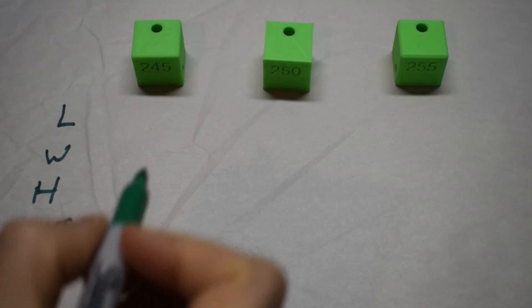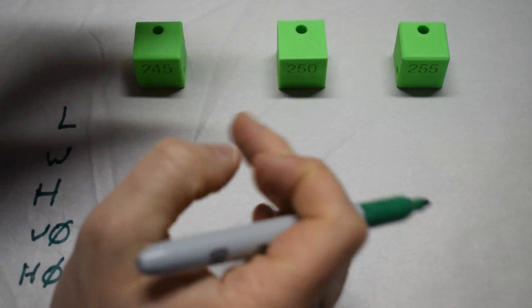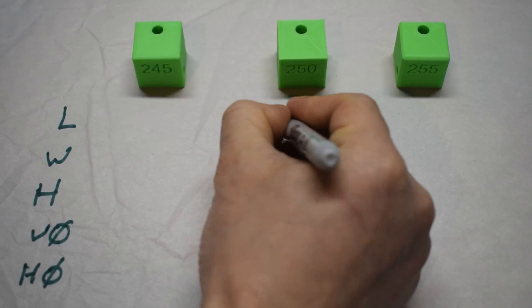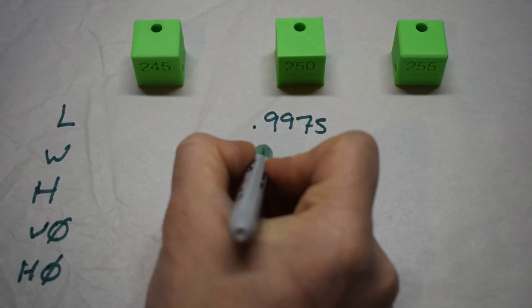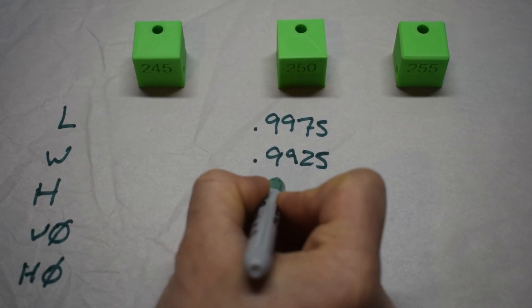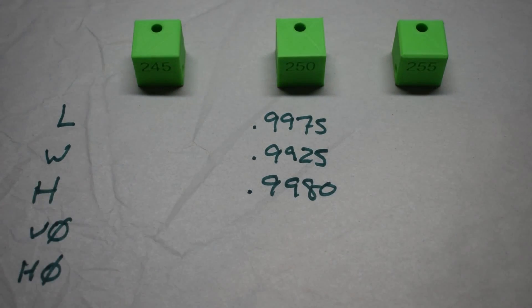Starting with the 250, for length I get 0.9975, for width 0.9925, and for height 0.9980. All of our dimensions are undersized, but these are all less than one percent.